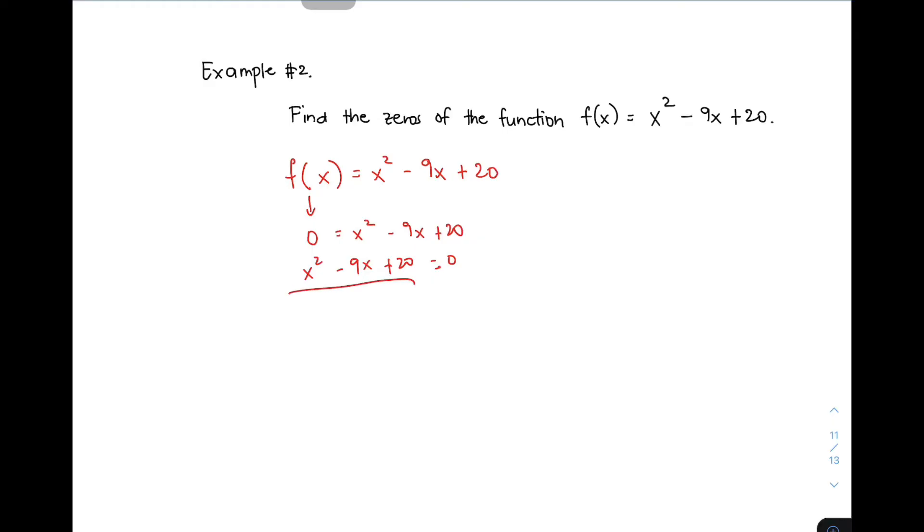Now, you will think of the factors of this trinomial. The factors are (x - 5)(x - 4) = 0 because this one is positive. We need to assume that the signs of the factors of 20 are the same because it is positive. And then, look at the sign of your middle term. Since that is negative, I will use two negative numbers. Check natin kung tama tayo. When you multiply negative 5 by negative 4, it will give you positive 20. But, when you add negative 5 and negative 4, it will give you negative 9. So, the factors are correct.